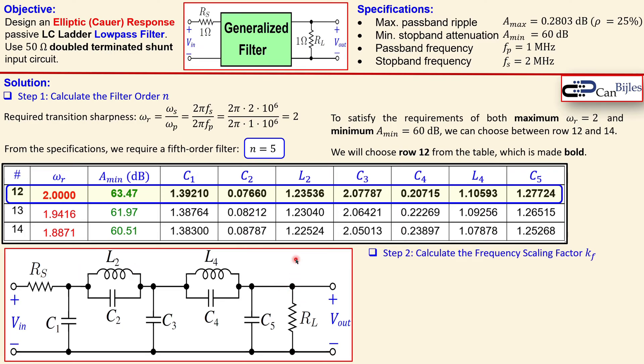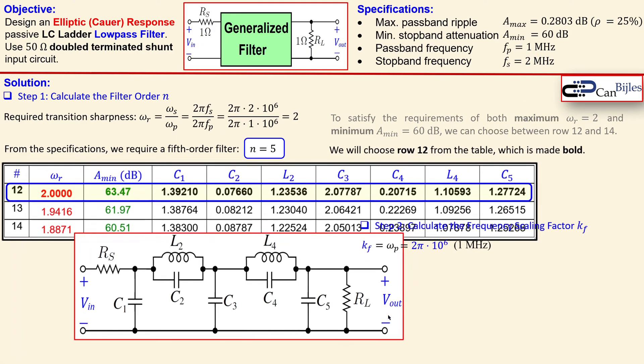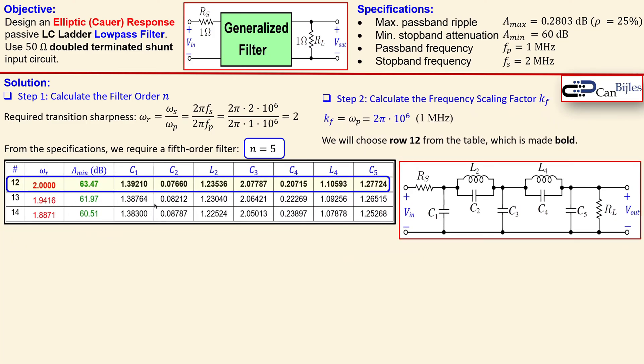Step two is the calculation of the frequency scaling factor, which is actually a setting value not actually a calculation. So that is really just ω_p which is 2π times f_p which is then 2π times one megahertz, which is of course one megahertz in hertz. Okay, now taking this all together we know that we need these coefficients, the normalized ones, and this is our circuit so we need to now scale it up.